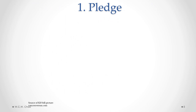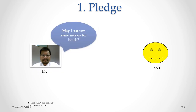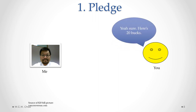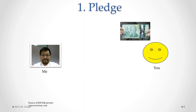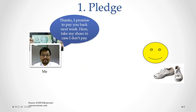The simplest form of security interest is called the pledge. Going back to our simple example: may I borrow some money for lunch? You kindly say yes, here's $20. The $20 goes over to me, and I say thanks, I promise to pay you back next week — here, take my shoes in case I don't pay. So I take the shoes off my feet and hand them to you.